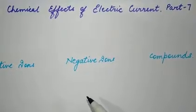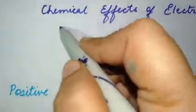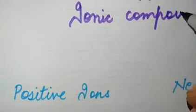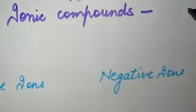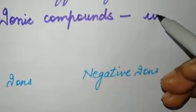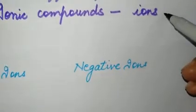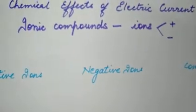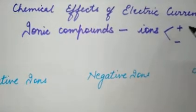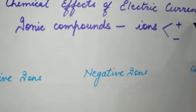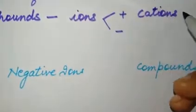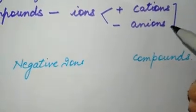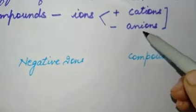Let's continue with the chemical effects of electric current. We were talking about ions and ionic compounds. Ionic compounds are those compounds which are made up of ions. Ions are of two types: positively charged ions and negatively charged ions. Positively charged ions are known as cations and negatively charged ions are known as anions — you can learn this for your higher classes.